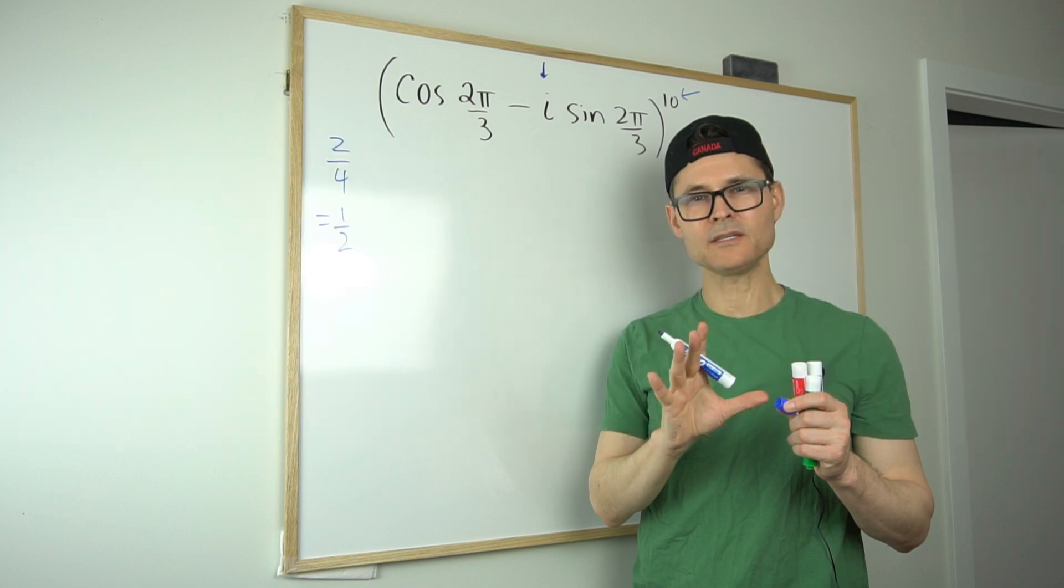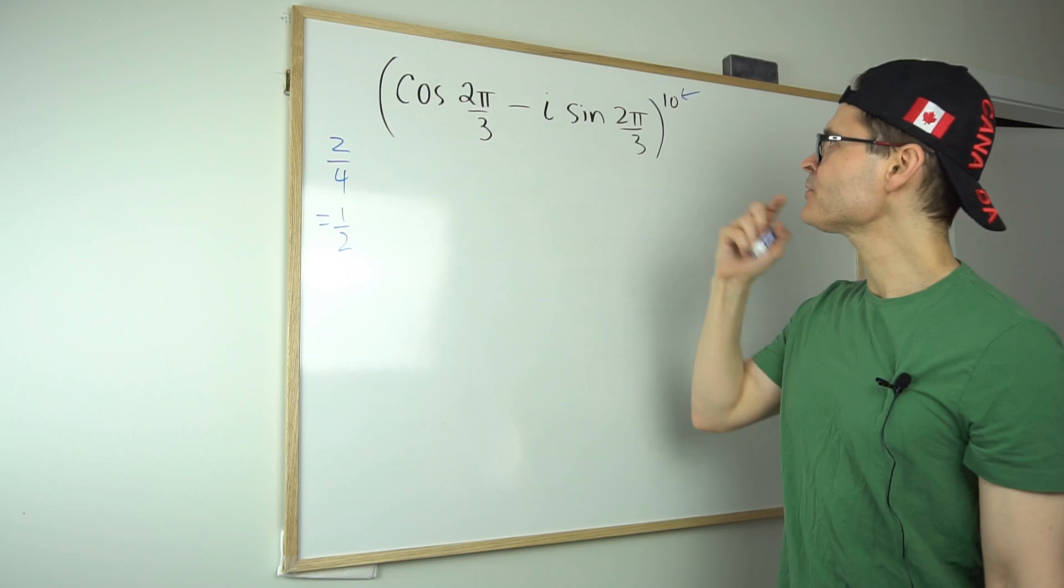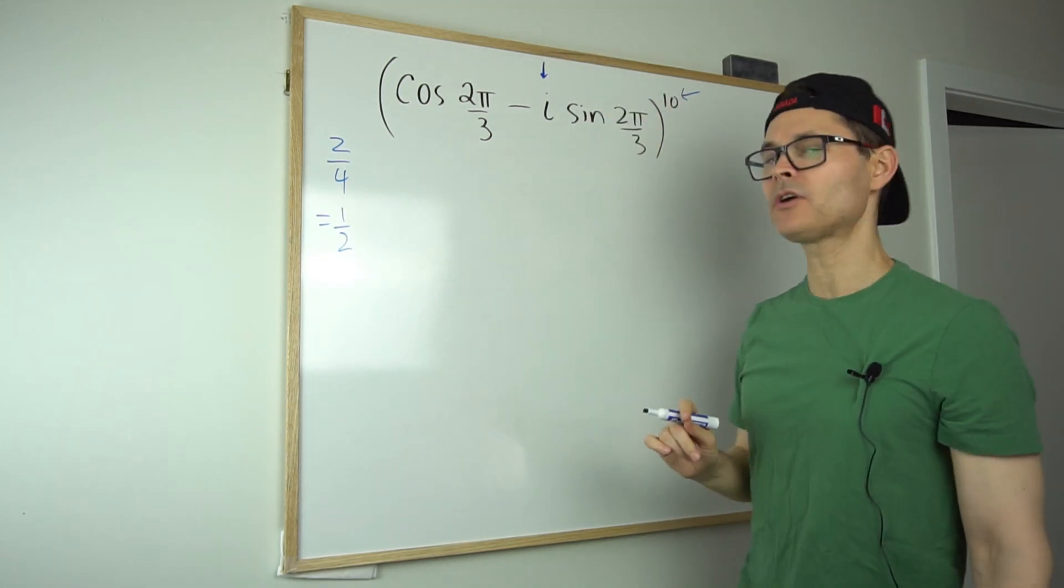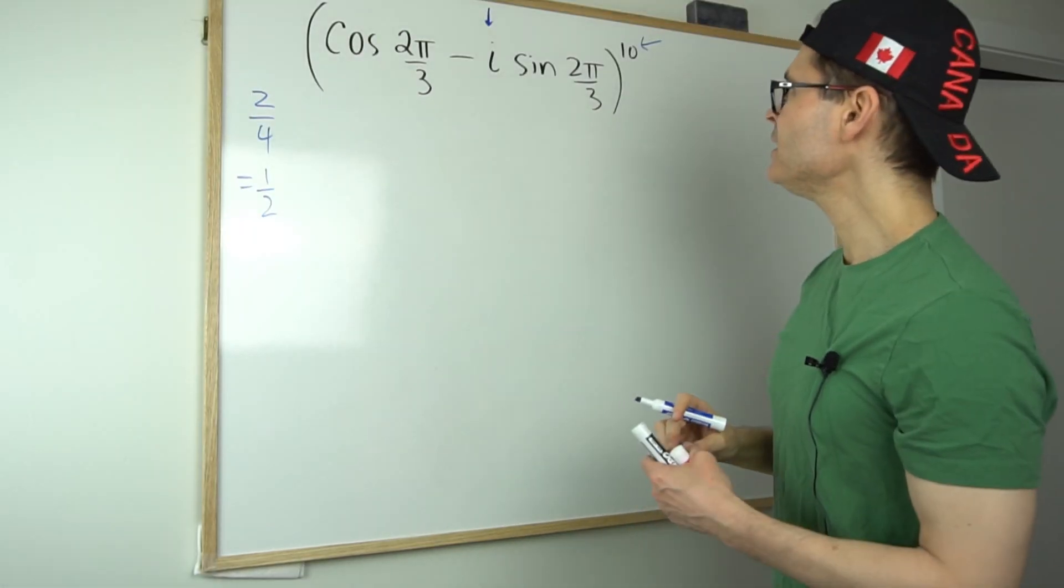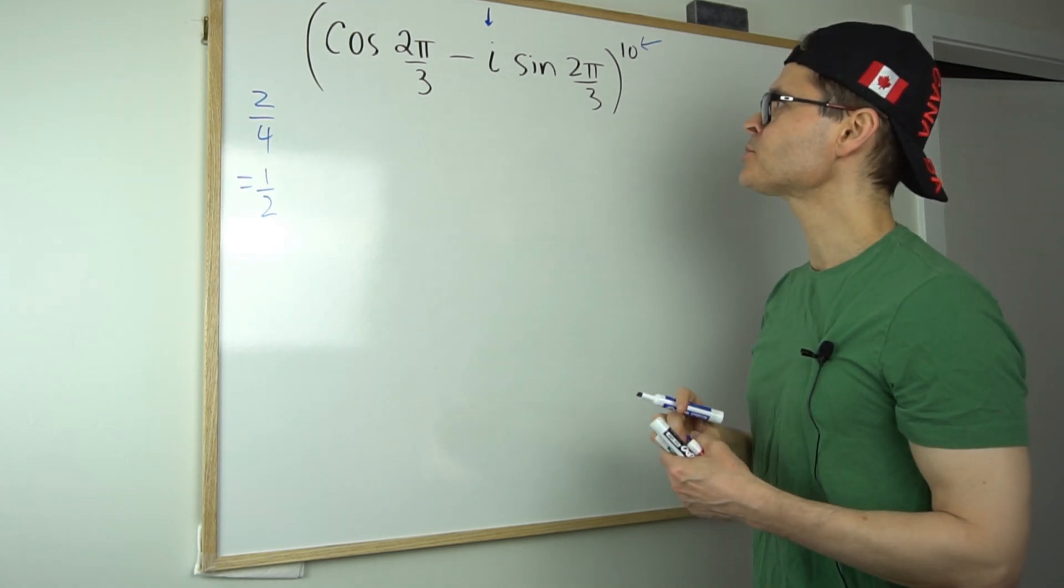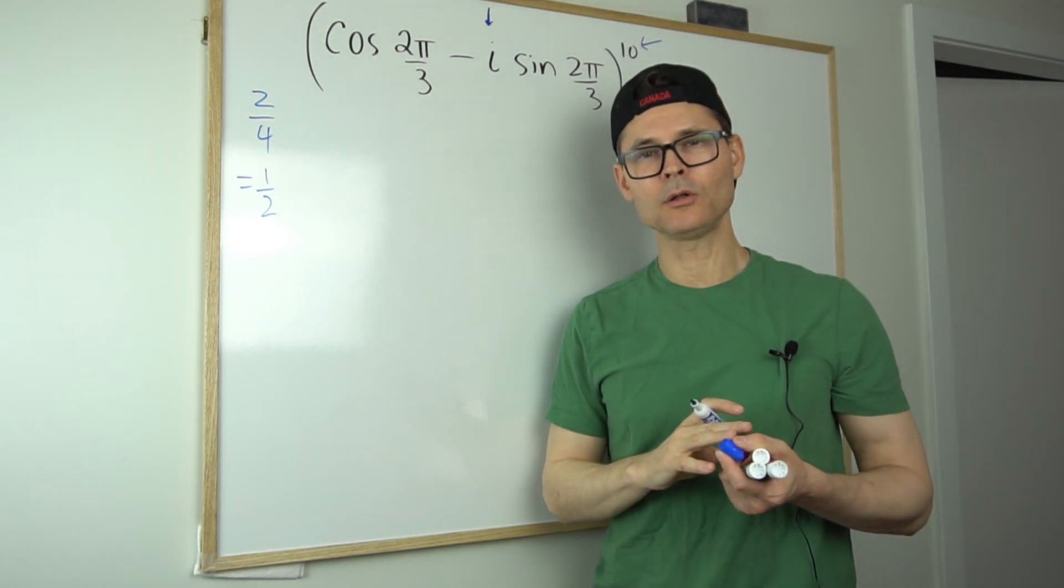And so back to regular programming. Well, first off, notice that it's a complex number because it has the letter i in it. And so what we're going to do here is we're going to take advantage of a theorem called De Moivre's theorem.